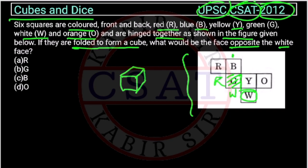So what this will become? It means Y is opposite to R, B is opposite to W, and O is opposite to G. Right.